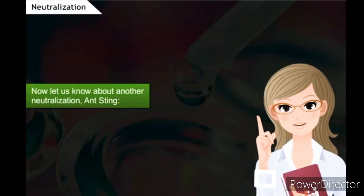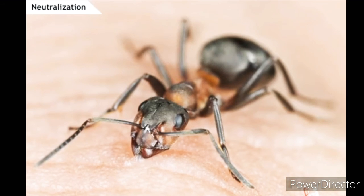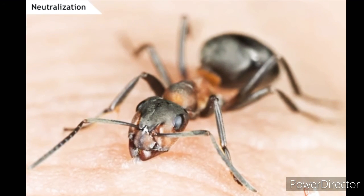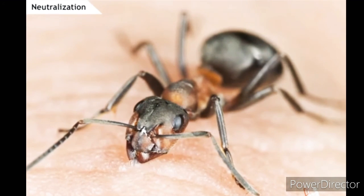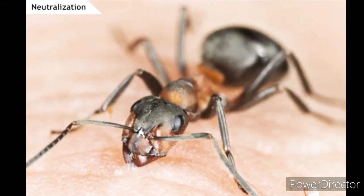Now, let us know about another neutralization: ant sting. The sting of an ant contains formic acid. When an ant bites, it injects formic acid into the skin, thus causing pain.